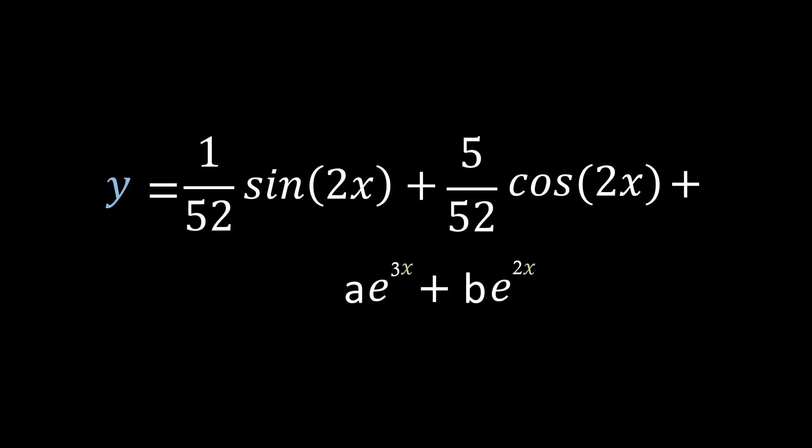Therefore we find our general solution to be y equals 1 over 52 sine 2x plus 5 over 52 cos 2x plus ae to the 3x plus be to the 2x.